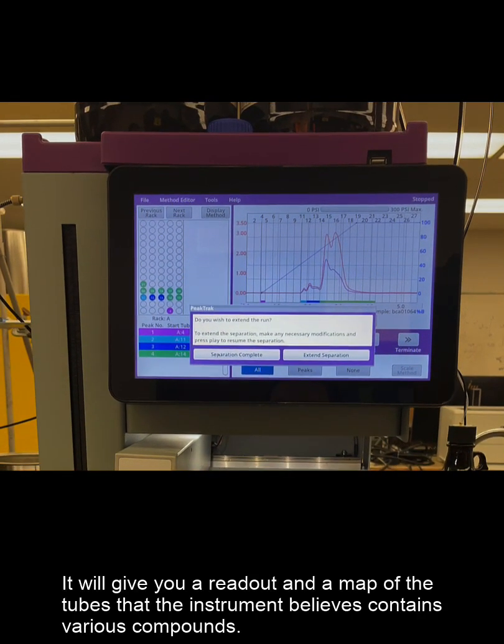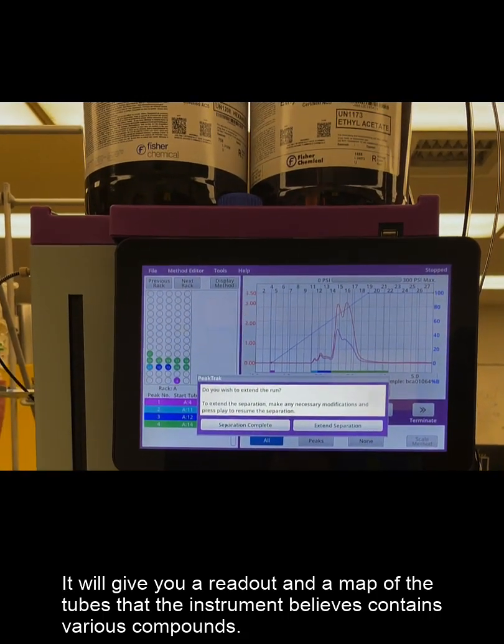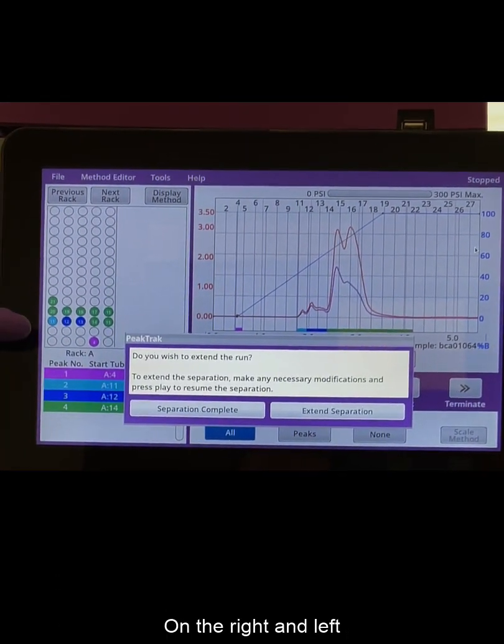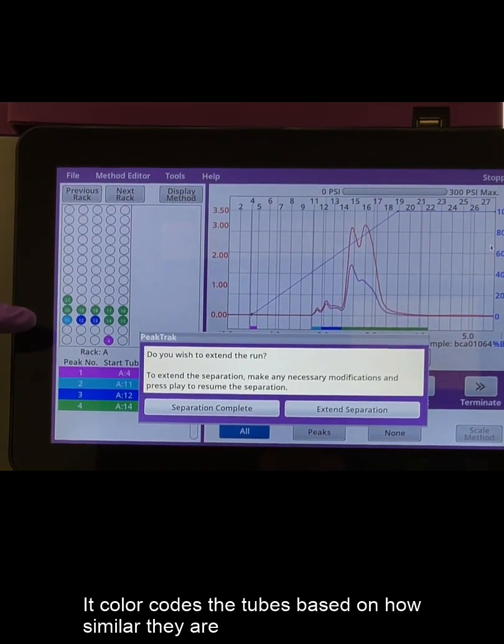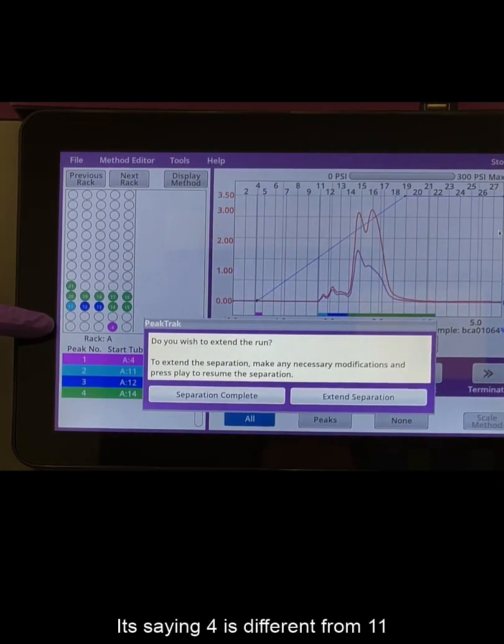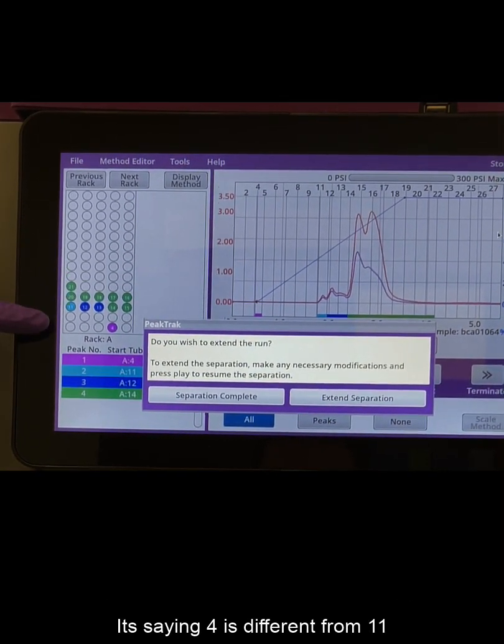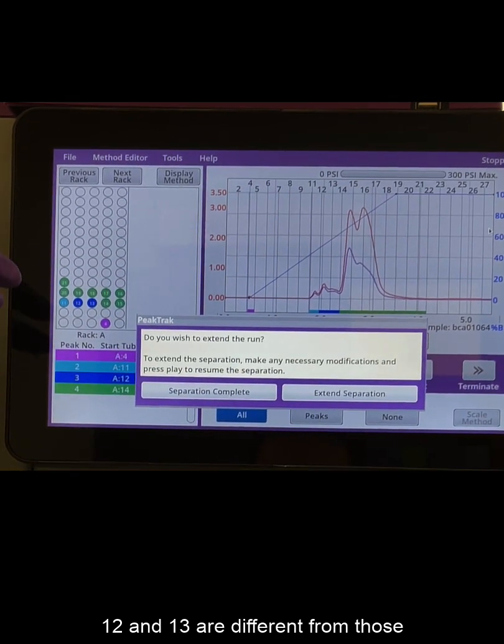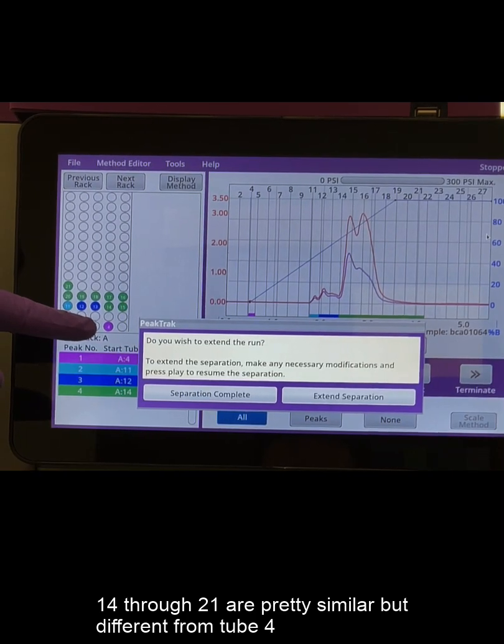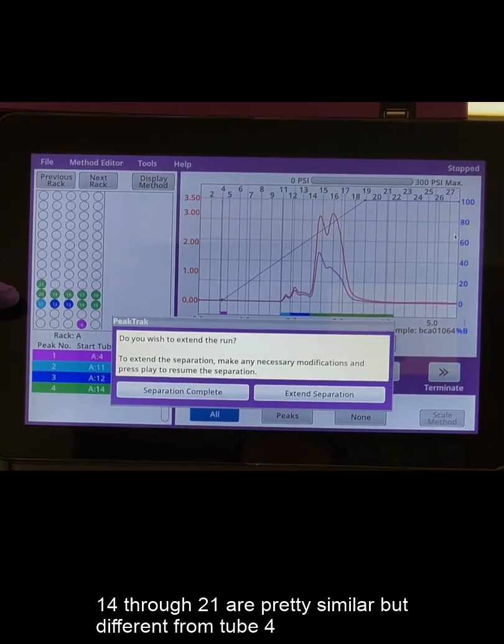It would give you a readout and a map of the tubes that the instrument believes contains various compounds on the right and the left. It also color codes the tubes depending on how similar it believes the solutions are. So it's saying tube 4 is different from 11, and 12 and 13 are different from those, and 14 through 21 would all be pretty similar and different from tube 4.